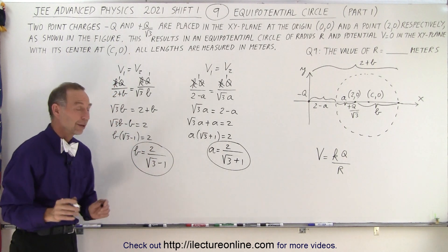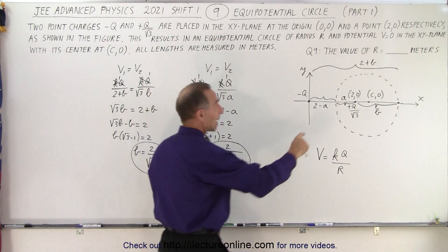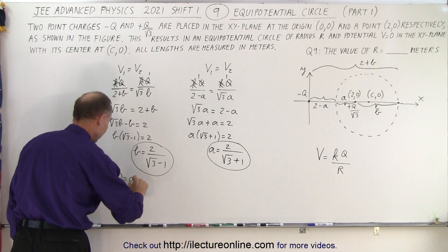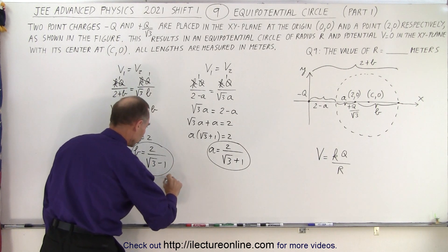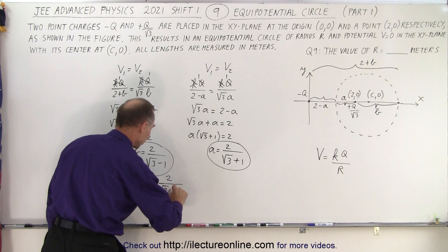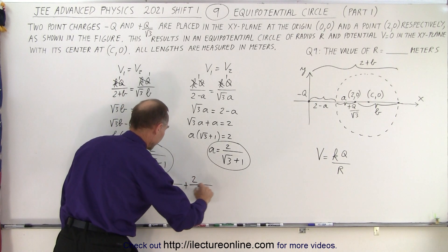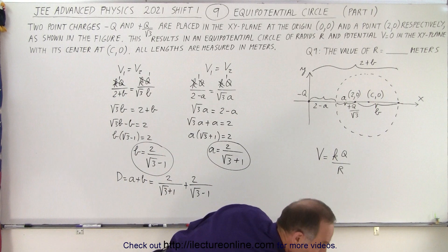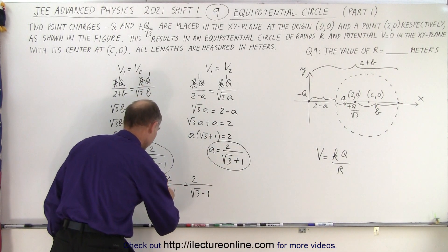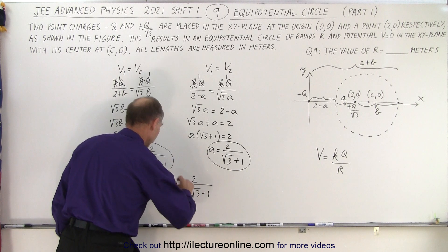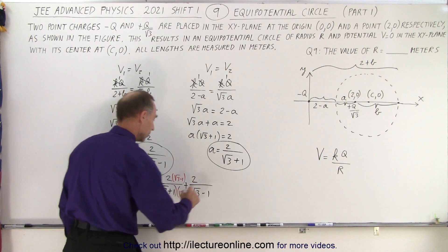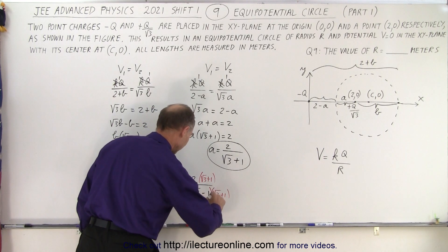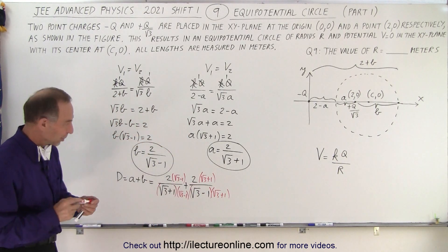The diameter of the circle is simply A plus B. So the diameter equals 2 divided by (square root of 3 plus 1) plus 2 divided by (square root of 3 minus 1). To find the common denominator, we multiply the first fraction's numerator and denominator by (square root of 3 minus 1), and the second fraction's numerator and denominator by (square root of 3 plus 1).